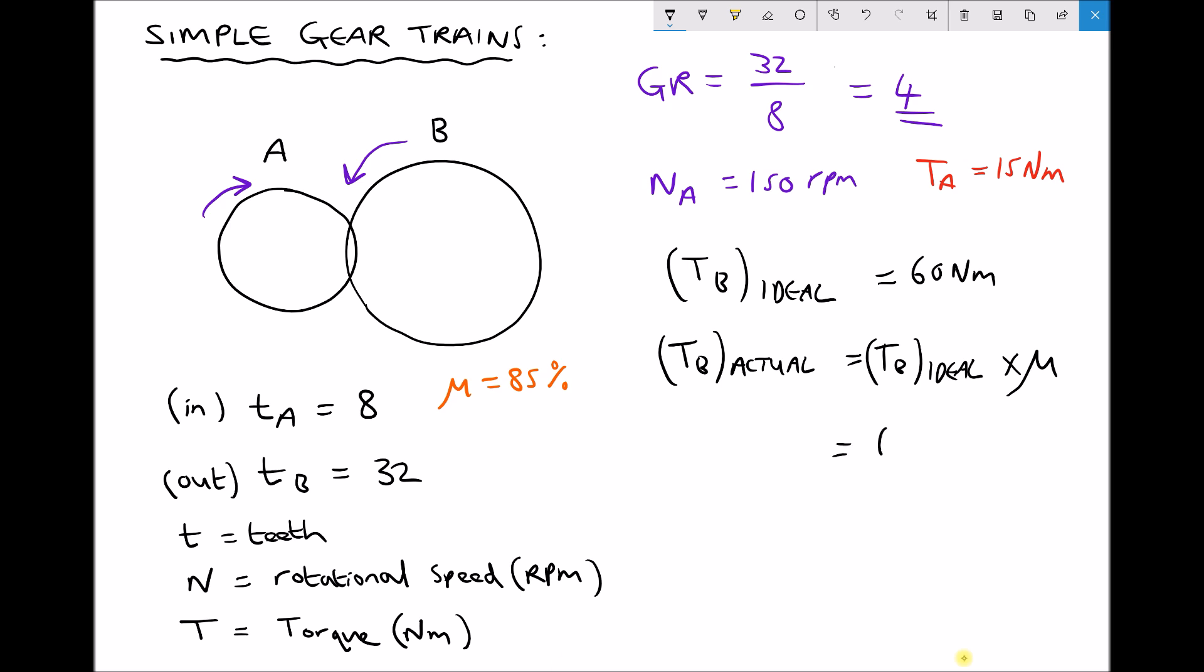So what we can write is tb actual equals tb ideal times the efficiency as a decimal. So what we would get is 60 times 0.85, which also equals 51 Nm.